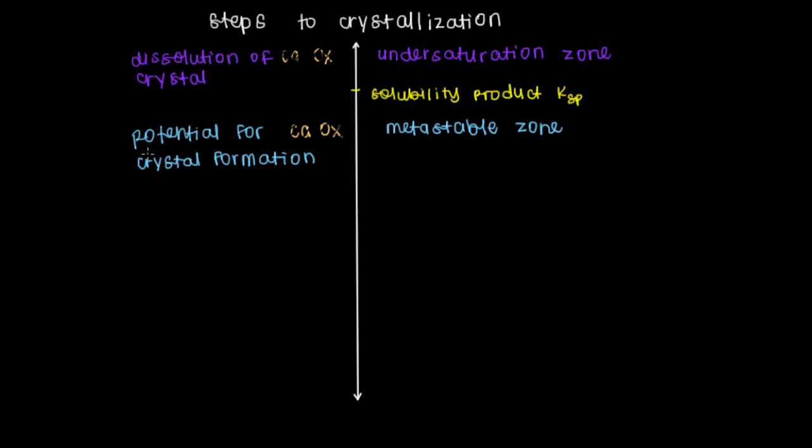And the reason why we say we have the potential for crystal formation is because there are other things that can be present in our solution to help the crystals form. So these things that help crystal formation are called promoters. And these are separate solutes that may be present in our solution to increase the likelihood for crystal formation.